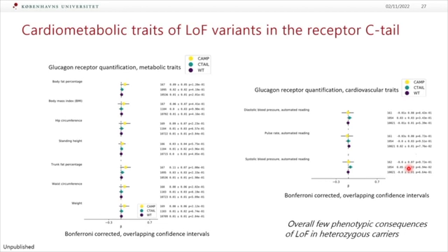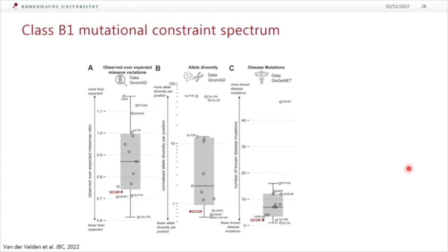Overall, we do not see many phenotypic consequences of loss of function in heterozygous carriers of the glucagon receptor. Looking at other receptors, we compared the amount of receptor variants relative to what would be expected from the overall background sequence length. The glucagon receptor comes out as very, very low in variant frequency. The GIP receptor comes out as very high. When we compare allele frequencies per position and known disease mutations, the glucagon receptor consistently comes out very low — meaning this receptor is very, very conserved.